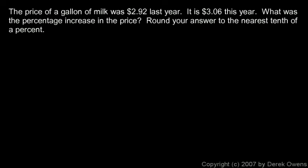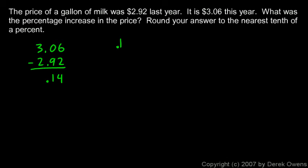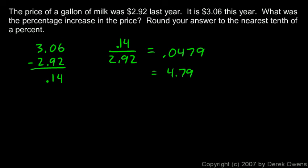We need to round to the nearest tenth of a percent. First, figure out how much the price went up: take $3.06 and subtract $2.92 — this year's price minus last year's price — and that comes out to 14 cents. So we ask: 14 cents is what percentage of the original price? We divide 0.14 by 2.92, and 0.14 divided by 2.92 comes out to 0.0479, so as a percentage that would be 4.79%.